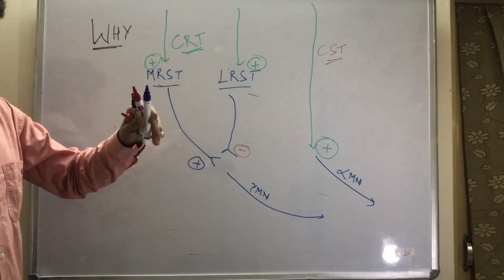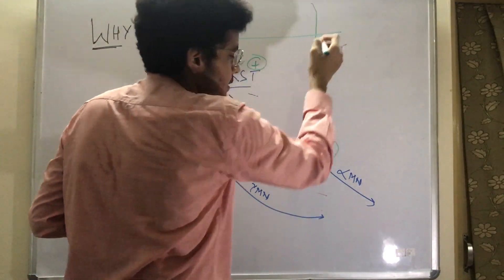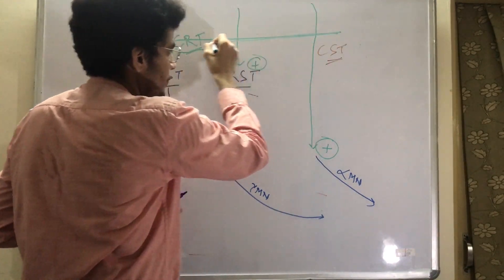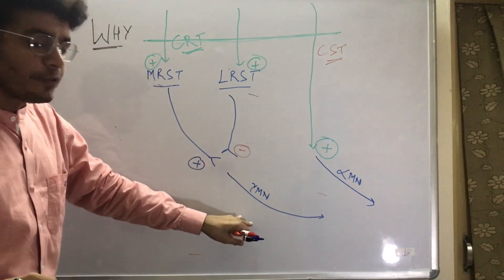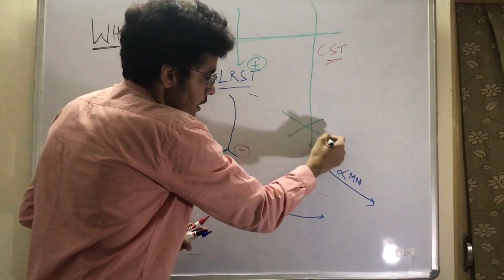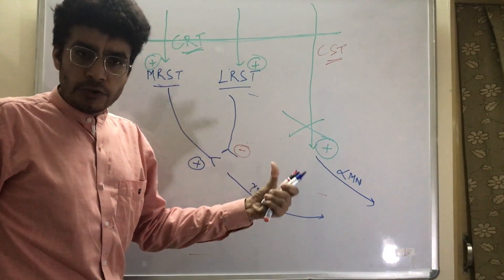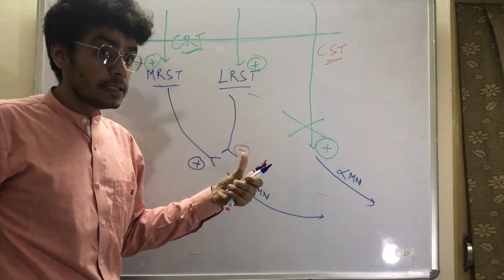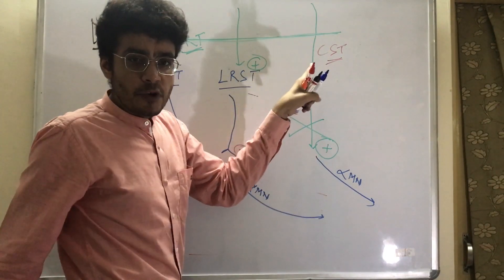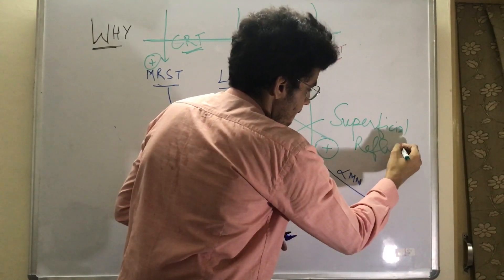Upper motor neuron lesion is a lesion of these descending tracts. When we cut this connection, the alpha motor neuron, which was receiving excitatory input from the higher center, loses that excitation. Its activity is therefore reduced. Since the superficial reflex pathway depends solely on the alpha motor neuron and the gamma motor neuron plays no role in it, upper motor neuron lesion causes superficial reflexes to be lost.